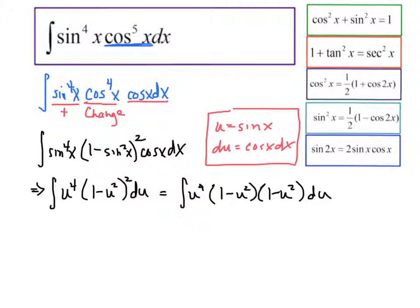So then, let me continue down here. We're going to have u to the fourth. We're going to have 1 minus 2u squared plus u to the fourth du. Which now I'm going to multiply the u to the fourth in. So I'm going to have u to the fourth minus 2u to the sixth plus u to the eighth du.